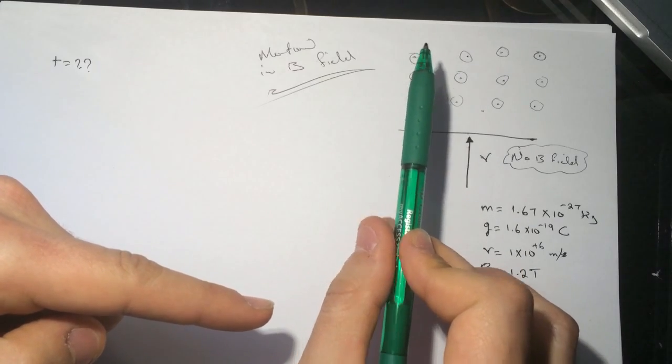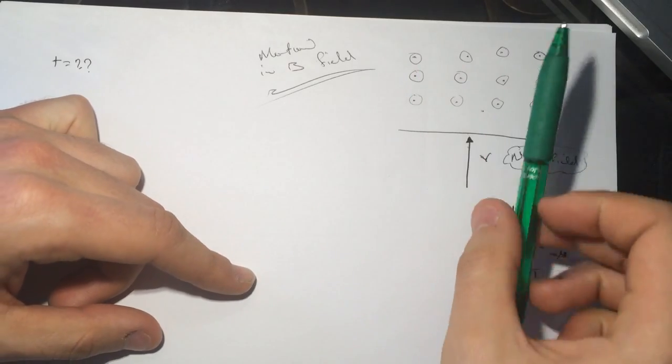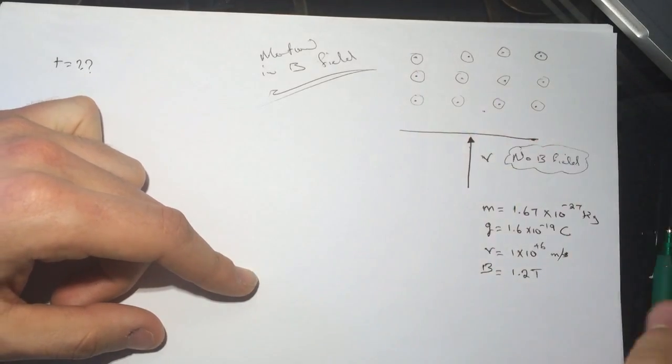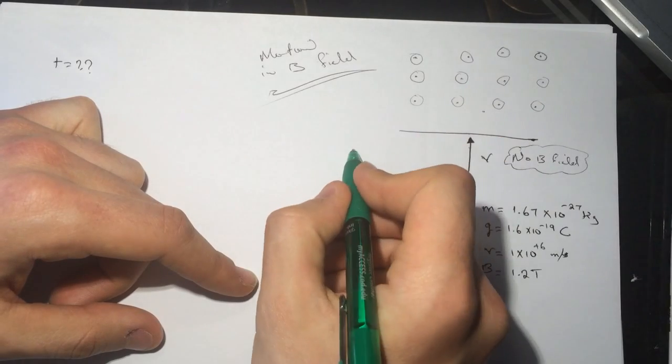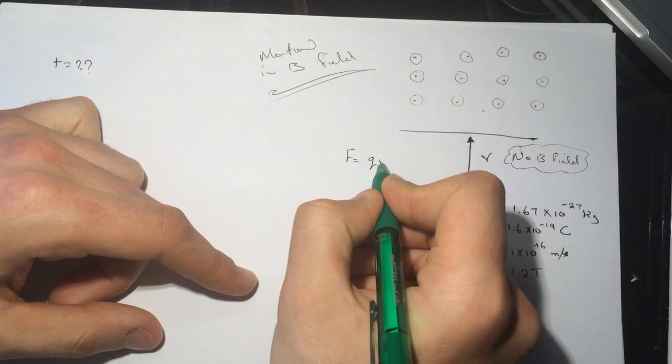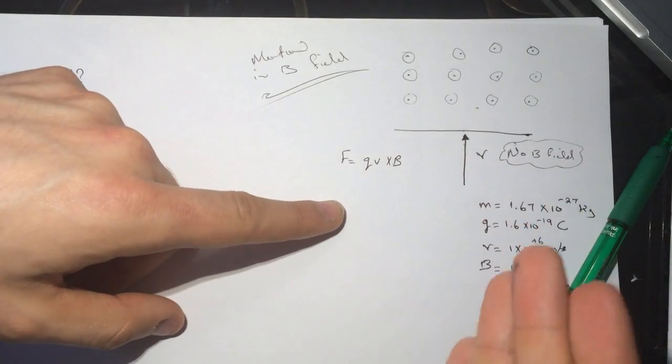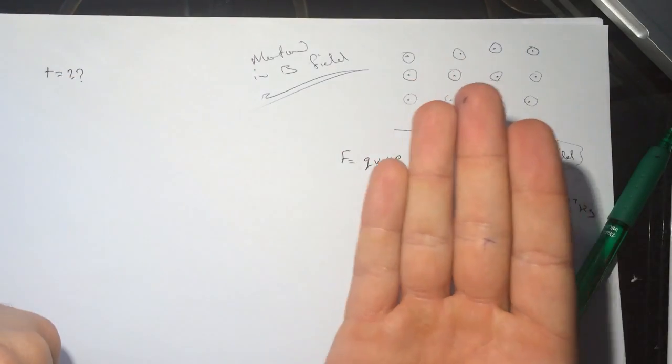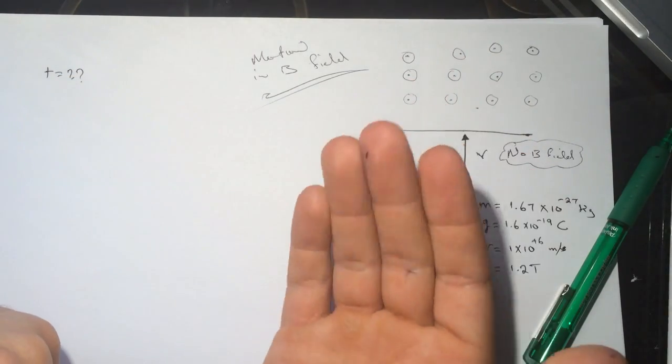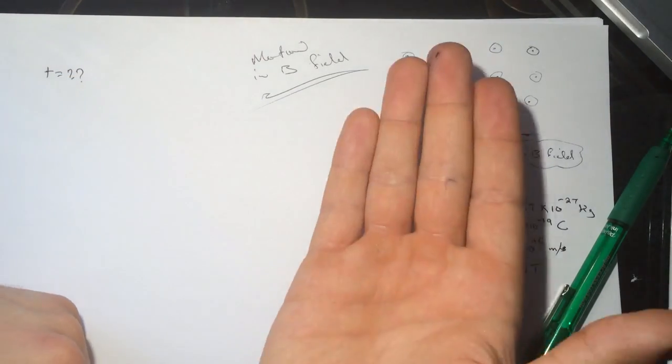So the force is equal to Q V cross B. The V here is going up, put it with the other fingers and cross it with the B field, so V cross B...